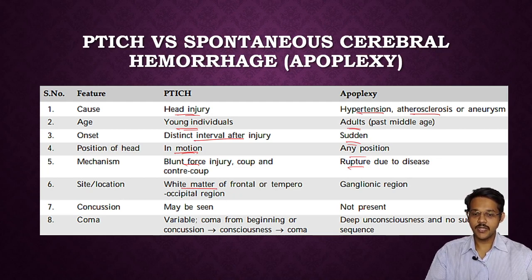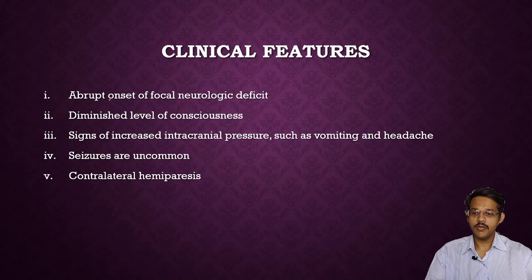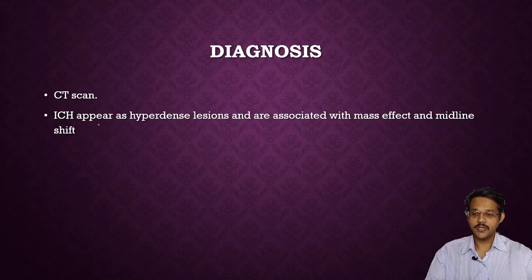Traumatic intracerebral hemorrhage mechanism is blunt force injury with vessel rupture due to diseases. It is located in the white matter of the frontal and temporal regions. Concussion may be seen in traumatic, but is not present in spontaneous hemorrhage. Unique features of intracerebral hemorrhage include abrupt onset of focal neurological deficit, diminished level of consciousness, signs of increased intracranial pressure (vomiting, headache), seizures (uncommon), and contrecoup hemorrhage. Diagnosis is mainly by CT scan, appearing as hyperdense lesions with mass effects and midline shift.